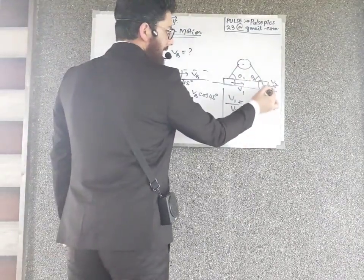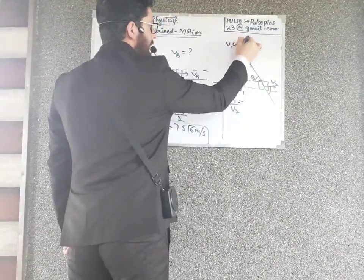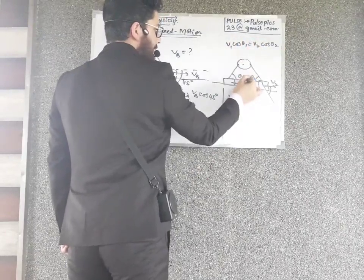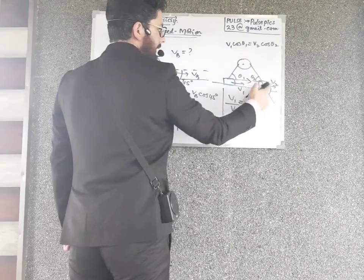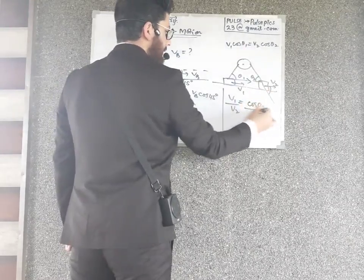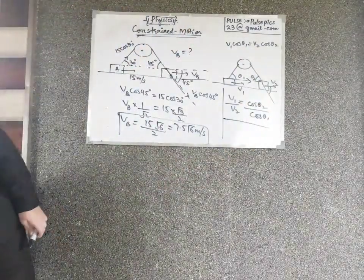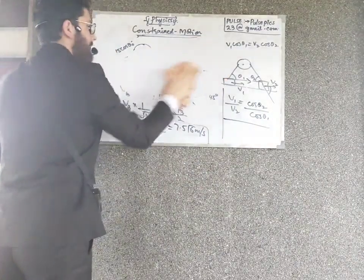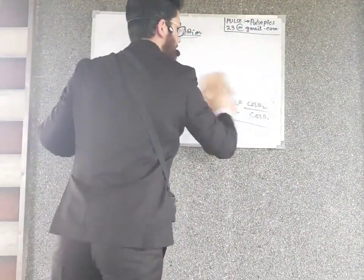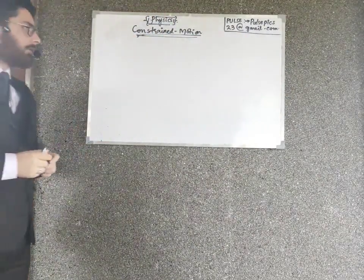So in general, we can write: V1 cos θ1 equals V2 cos θ2, meaning the components of velocity along the string are equal for any connected system. Therefore V1/V2 equals cos θ2 divided by cos θ1. This is the string constraint relationship. Check all our previous answers with this formula — they all verify correctly.